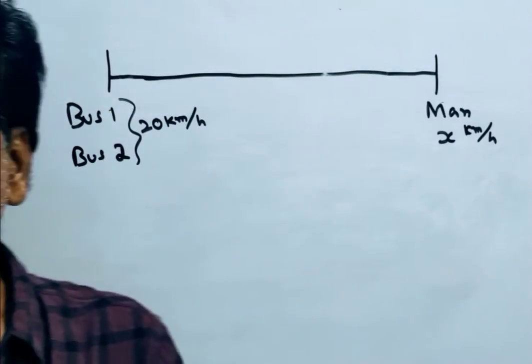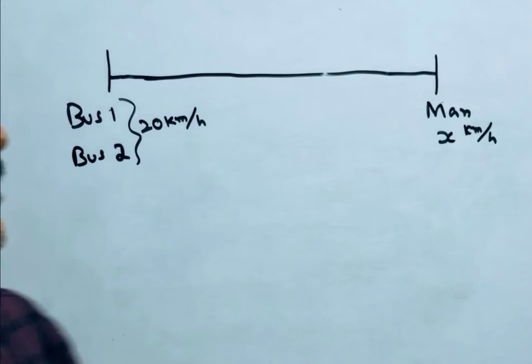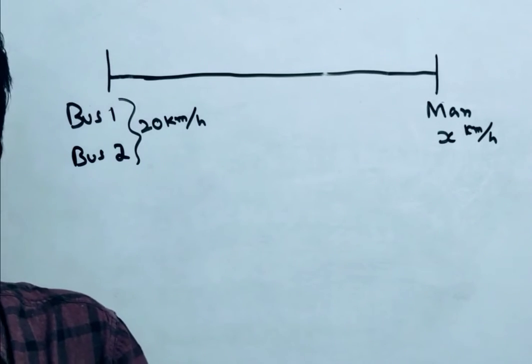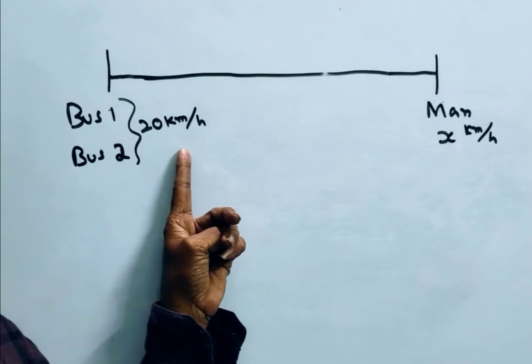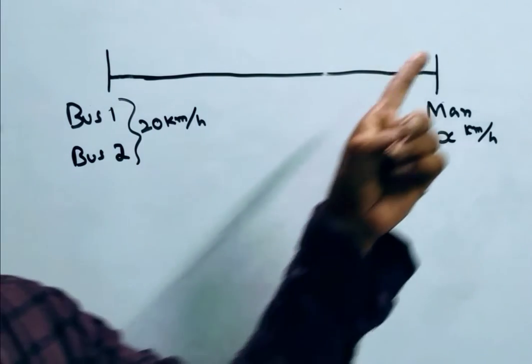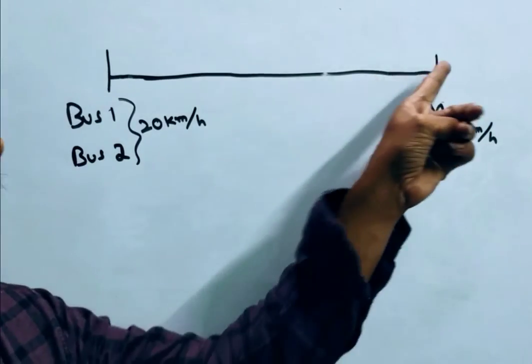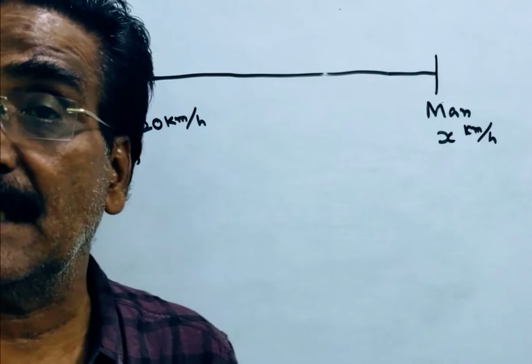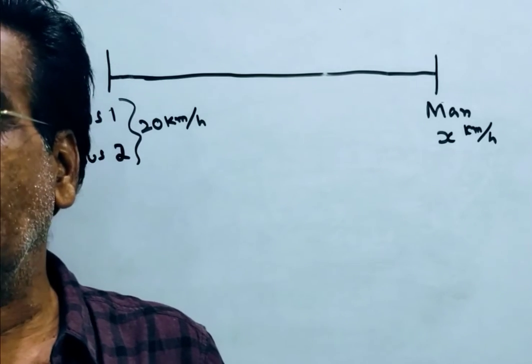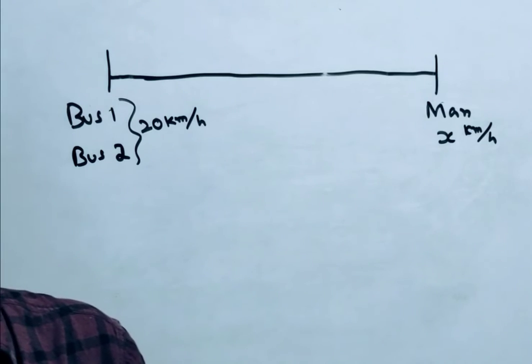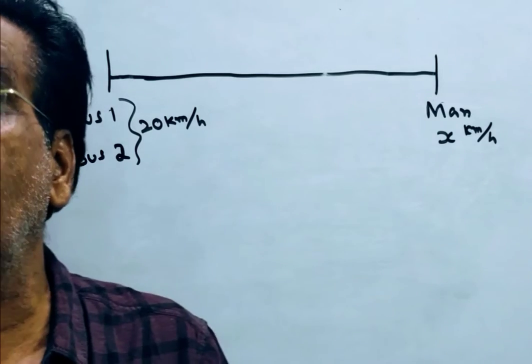Two buses start from a bus terminal at an interval of 10 minutes with a speed of 20 kmph. The man coming in the opposite direction of the bus meets the second bus after 8 minutes only. Then what is the speed of the man?